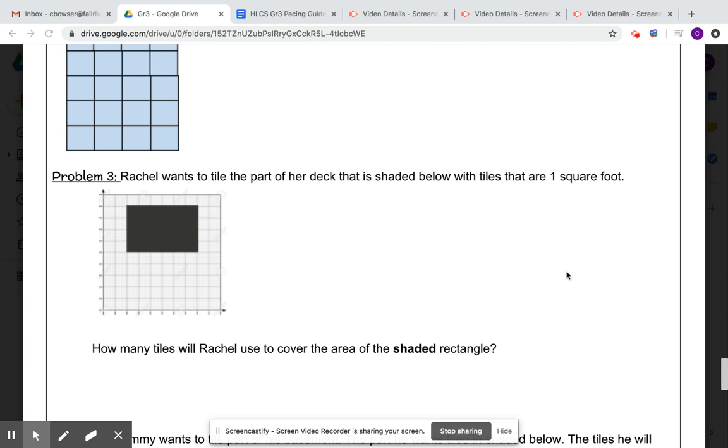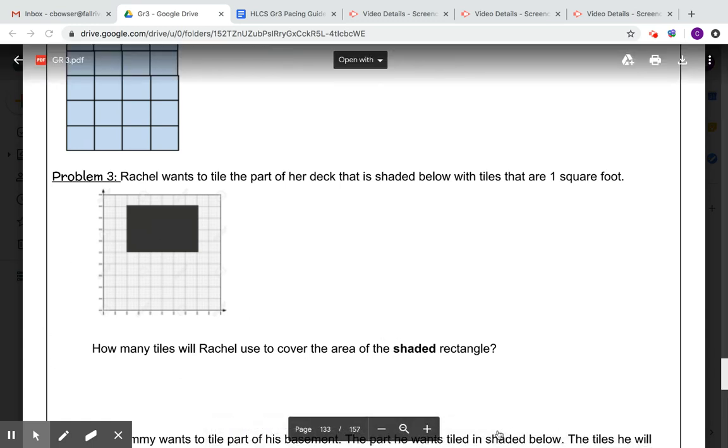Problem 3: Rachel wants to tile the part of the deck that's shaded below with tiles that are one square foot. I see that this is her deck and she wants to put tiles on this shaded part. The question says how many tiles will Rachel use to cover the area of the shaded rectangle? So I need to get a better look at this.